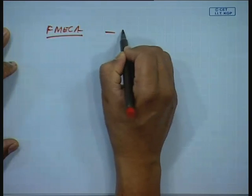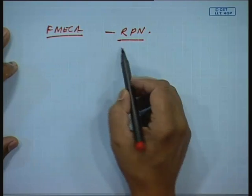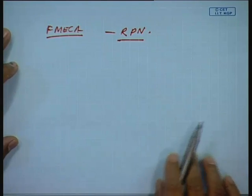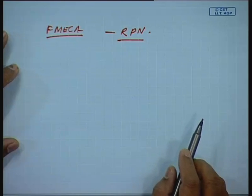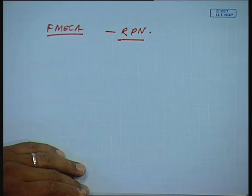Once we know the RPN numbers, we can decide whether CBM or condition-based maintenance needs to be done for the most critical component. In a steel plant, we can establish RPNs for the different processes and find out in which process CBM has to be done, in which process breakdown maintenance is appropriate, and in which process periodic maintenance is to be done.